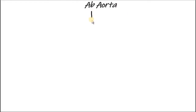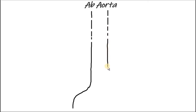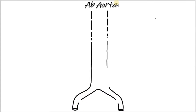The aorta is the main and largest artery in the human body, originating from the left ventricle of the heart and extending down into the abdomen, where it splits into two smaller arteries, the common iliac arteries. The aorta distributes oxygenated blood to all parts of the body throughout the systemic circulation. The abdominal aorta supplies blood to much of the abdominal cavity. It begins at the twelfth thoracic vertebra and ends at L4, with its bifurcation into the common iliac arteries.